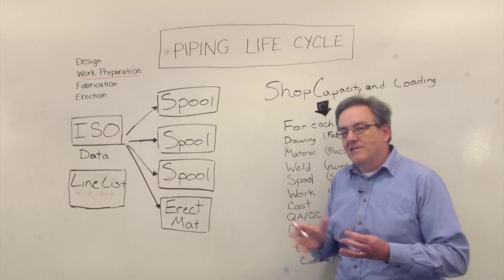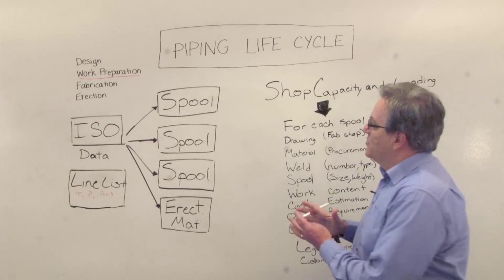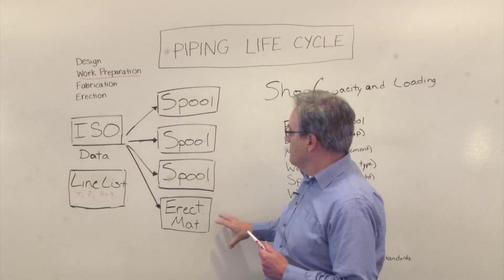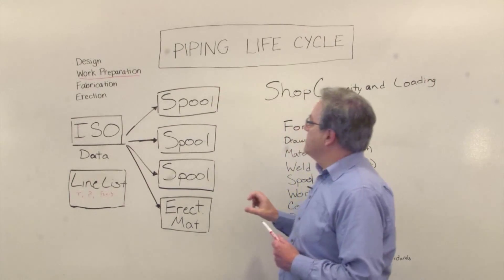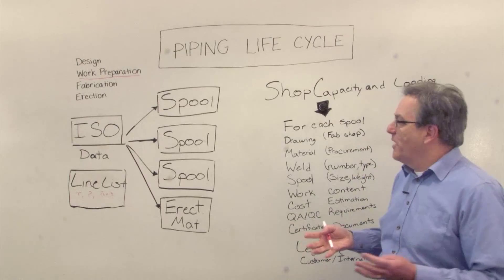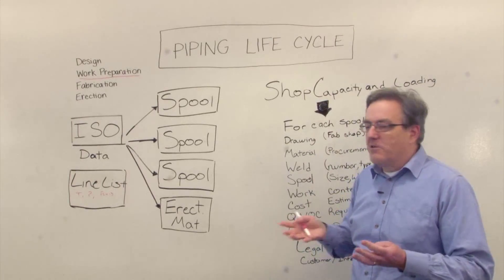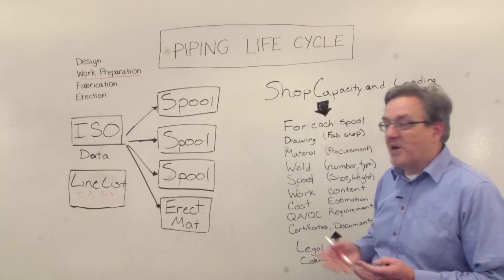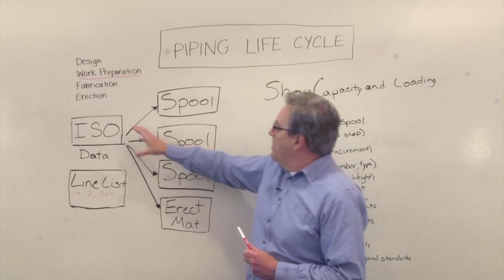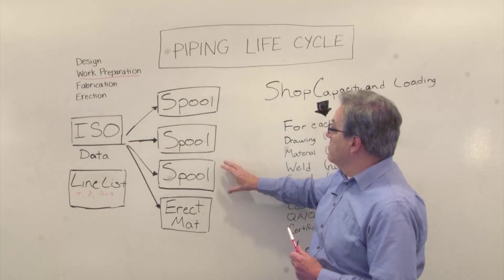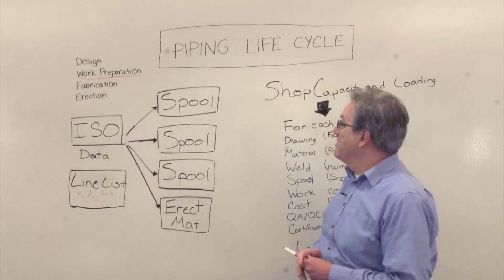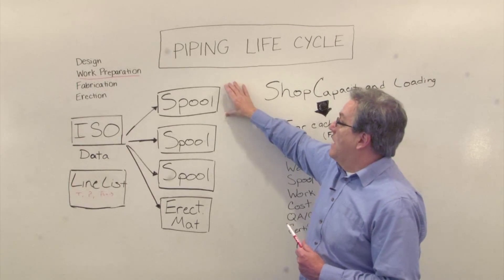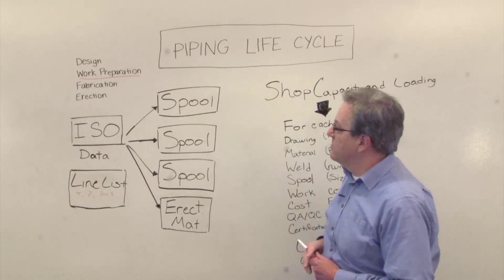The classical next step is to split up this ISO — this piping data — into a series of spools. If you're wondering what a spool is, it's basically the piece of pipe that you can manufacture in your pipe shop. There's no hard and fast rule, but it's something that maybe you can fit on the back of a truck. Typically a pipeline will be split down into maybe five or ten spools depending on how big it is, and each spool is fabricated in a piping workshop as a unit and then delivered as a unit to the next stage.